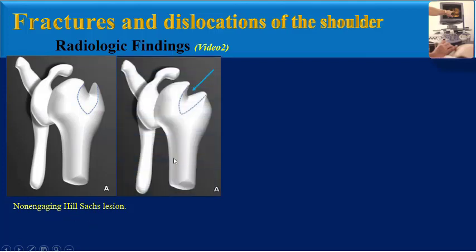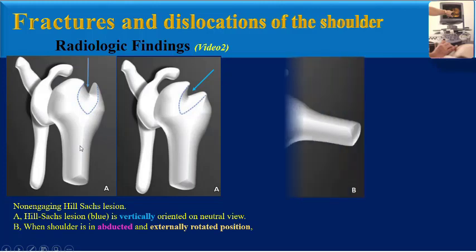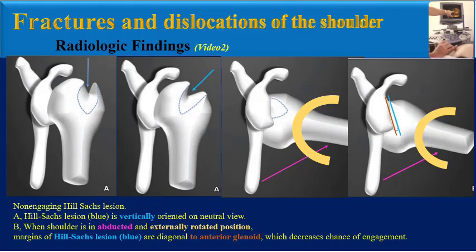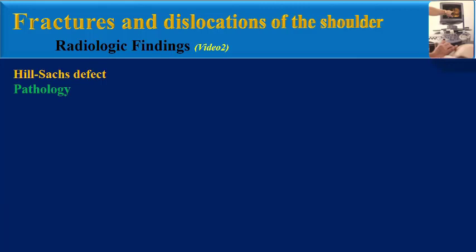This is another image of a non-engaging Heel Socks lesion. In comparison with the previous image, we can see here that the Heel Socks lesion is vertically oriented on neutral view, and when the shoulder is abducted and externally rotated, the margins of the Heel Socks lesion are diagonal to the anterior galanoid, which decreases the chance of engagement.